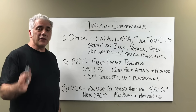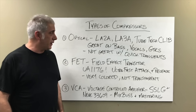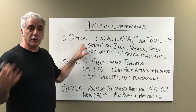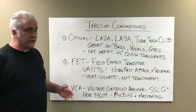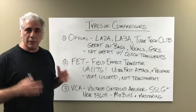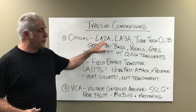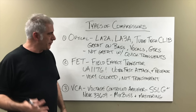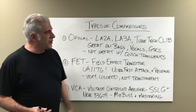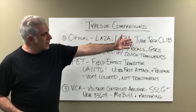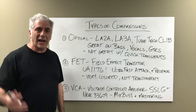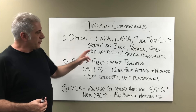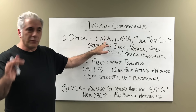Now let's talk about types of compressors. You've heard terms like optical or opto compressor. The most commonly seen optical compressors in plug-in form or as hardware units are the LA-2A by Teletronix — Universal Audio has a great emulation of it — the LA-3A, and the Tubetech CL-1B, which is a really common compressor used in Nashville for tracking vocals and other instruments. These are great on bass — the LA-2A is incredibly great on bass.